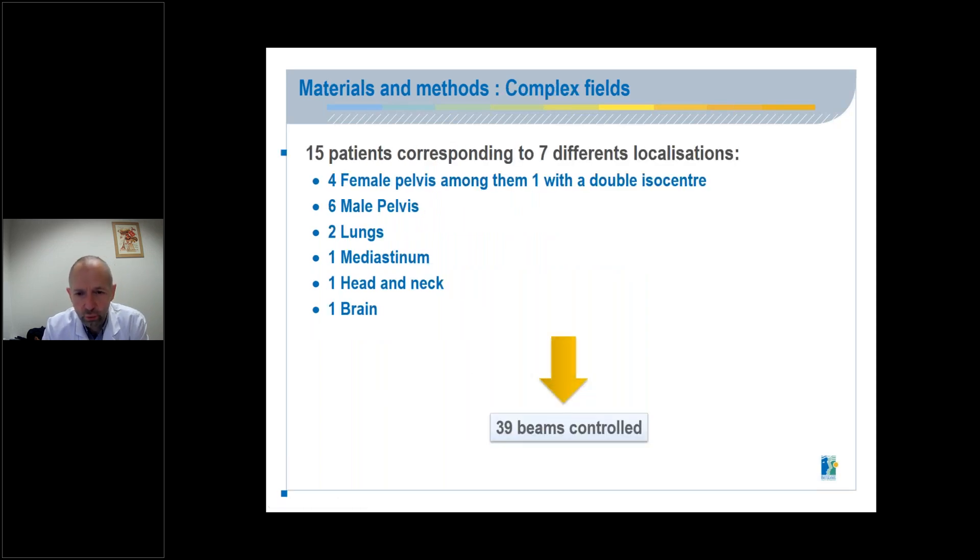For complex fields, we study the dose distribution relative to 15 patients, corresponding to seven different localizations. Among them, we find four female pelvis. Among them, we find one with a double iso sampler. Six male pelvis, two lungs, one mediastinum, one end and neck, and one brain. This corresponds to 39 beams.